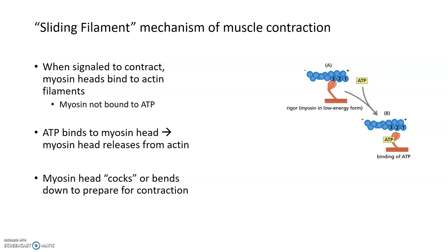When a signal to contract is received, the first thing that needs to happen is ATP comes and binds to myosin heads and releases those myosin heads from the actin filaments, which you can see in blue. Myosin heads are in red. That binding of ATP to myosin actually cocks back the myosin head or bends it backward in preparation for contraction — pulled back, primed, and ready to go when bound to ATP. So the signal to contract comes in, ATP binds to the myosin heads, cocks those myosin heads back. Myosin is not bound to actin yet, but it is primed and pulled back, ready to go.